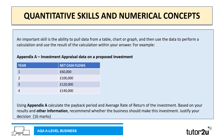An important skill is the ability to pull data from a table, chart or graph, perform a calculation, and then use the result within your answer. For example, a typical AQA A-level business question might give you Appendix A with investment appraisal data, then ask you to calculate the payback period and average rate of return, and recommend whether the business should make the investment — justifying your decision using both quantitative and qualitative information.